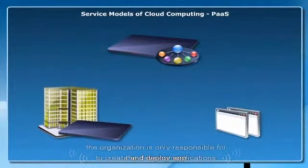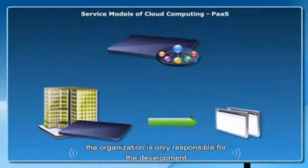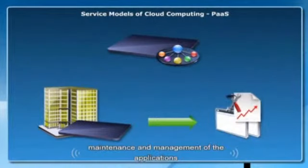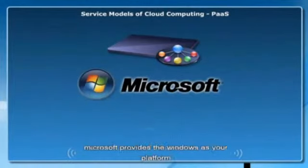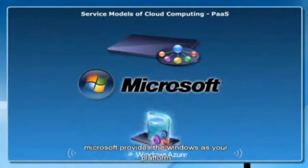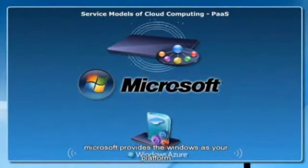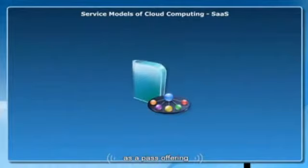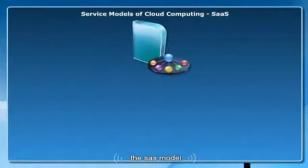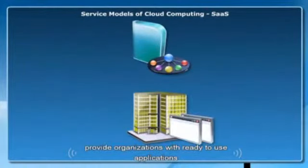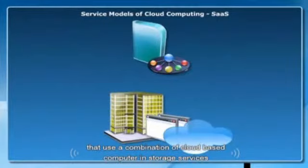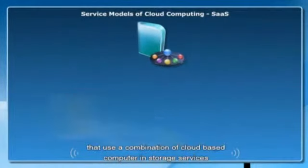The PaaS model provides organizations with a platform or runtime environment to create and deploy applications. The organization is only responsible for the development, maintenance, and management of the applications. Microsoft provides the Windows Azure platform as a PaaS offering. The SaaS model provides organizations with ready-to-use applications that use a combination of cloud-based compute and storage services.